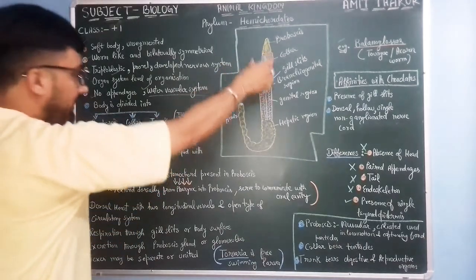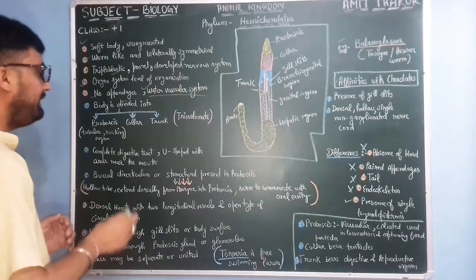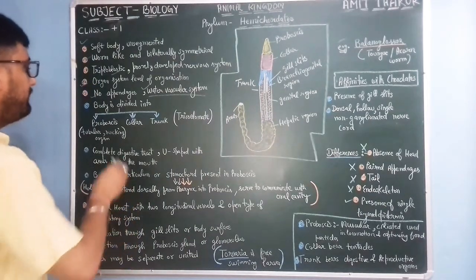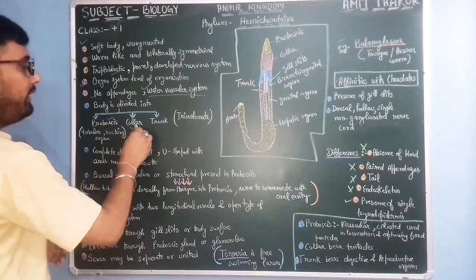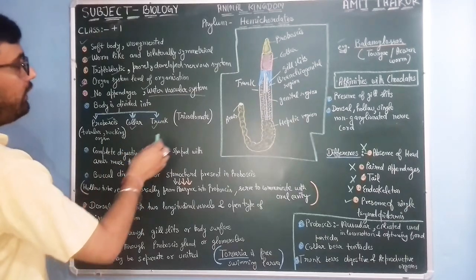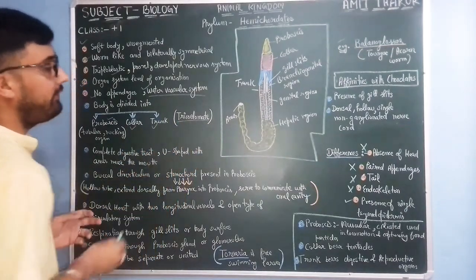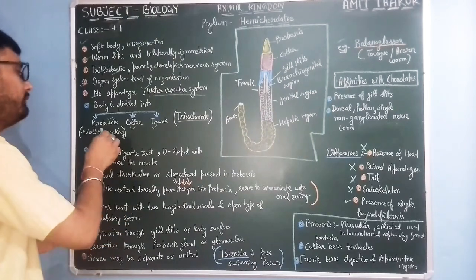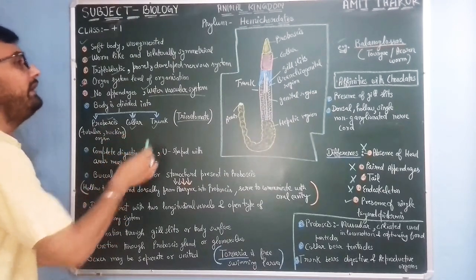The body is divided into three main regions: proboscis, collar, and trunk. They are also known as tricoelmates for having proboscis, collar, and trunk.